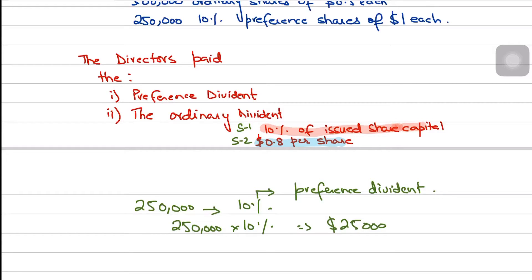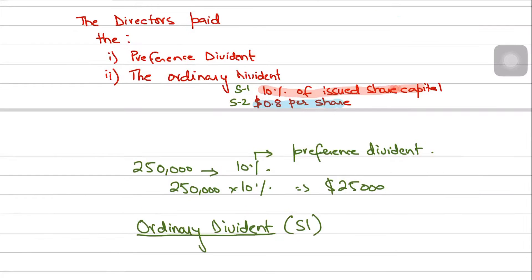So $25,000 is the preference dividend paid to preference shareholders. Preference shareholders receive their dividend before ordinary shareholders — that is why it is called a preference dividend. Now let's calculate the ordinary dividend using scenario 1.